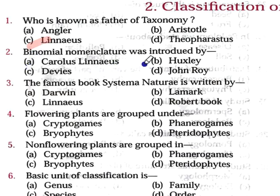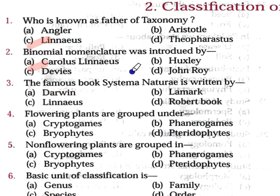Question number 2: Binomial nomenclature was introduced by — Option A: Carl Linnaeus, Option B: Huxley, Option C: Davis, Option D: John Roy. Option A is correct — Carl Linnaeus, who we called the father of taxonomy, gave binomial nomenclature in which he assigned a generic name and then a specific name or species. Generic name is genus plus species. That is why it is called binomial nomenclature — binomial means two names, a genus plus a species. For example, Homo sapiens: Homo is the genus and Sapiens is the species.